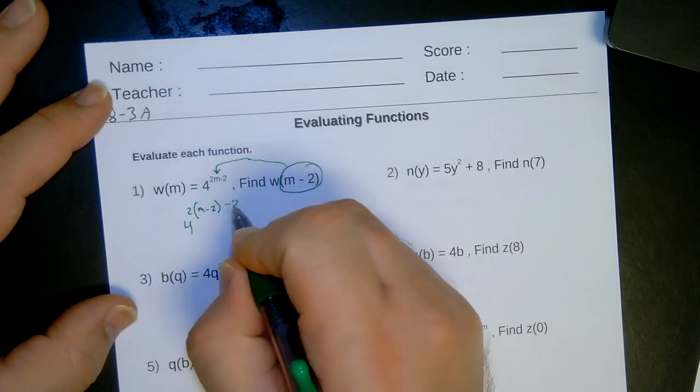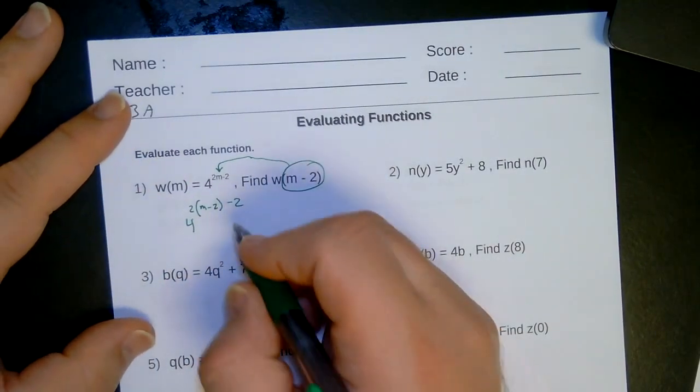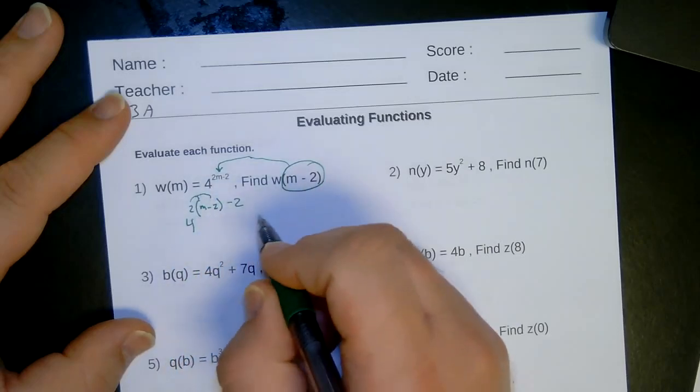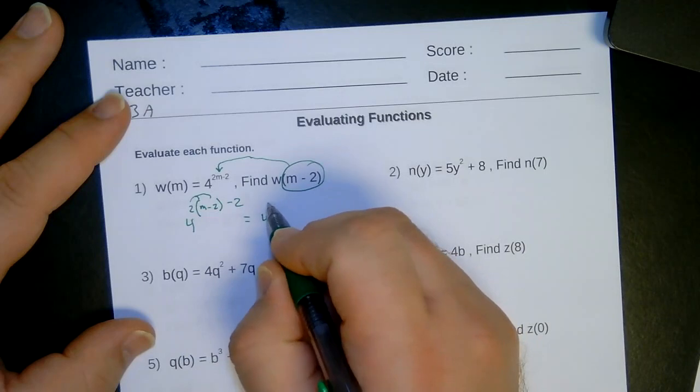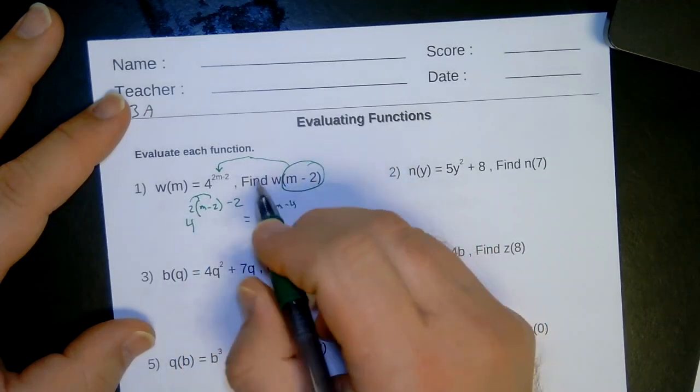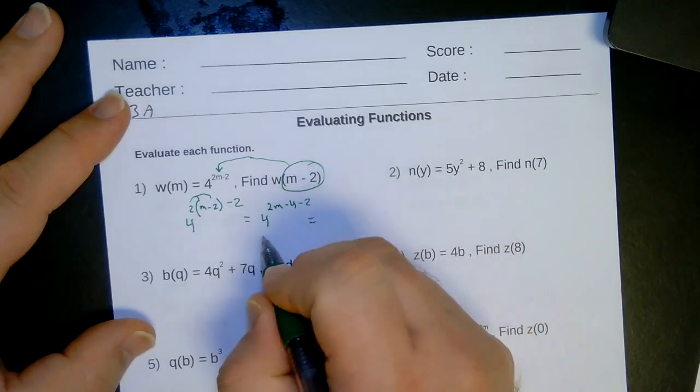And then I have another minus 2 outside of it. So again, this is just basic substitution. Let's see what we have here. Distribute the 2. So here's what it looks like. 4 then. And then I have 2m. 2 times 2 is negative 4. And I also have a minus 2 sitting there. So final answer.